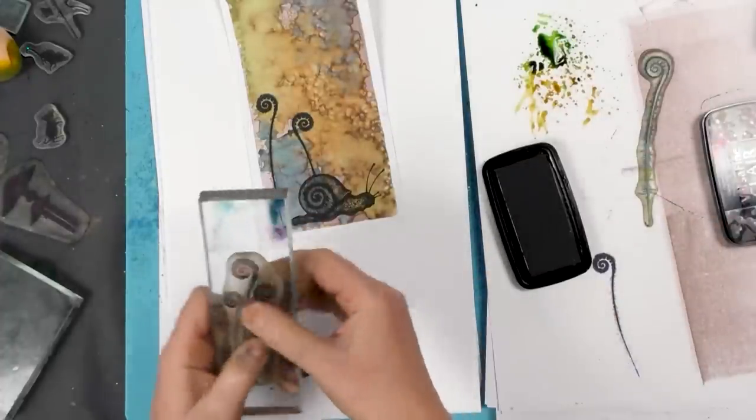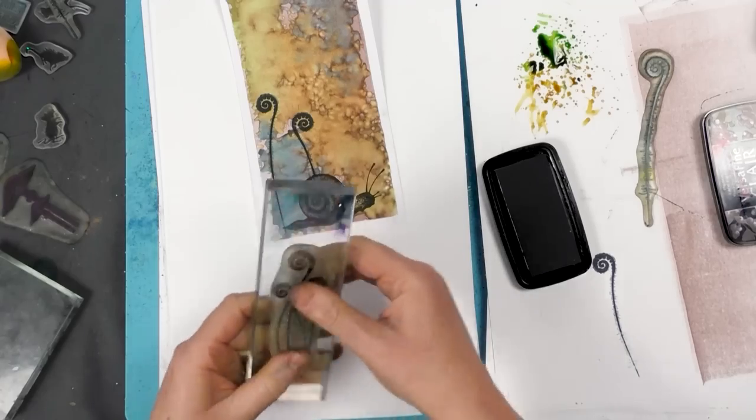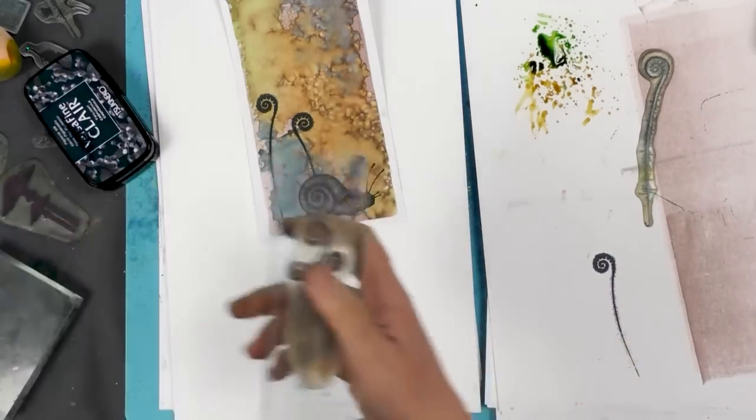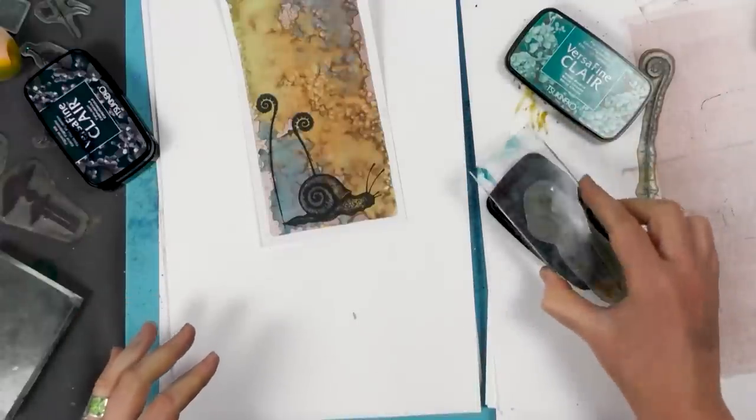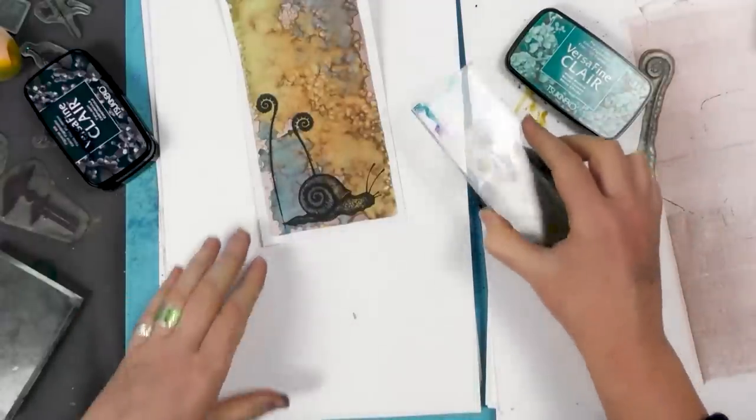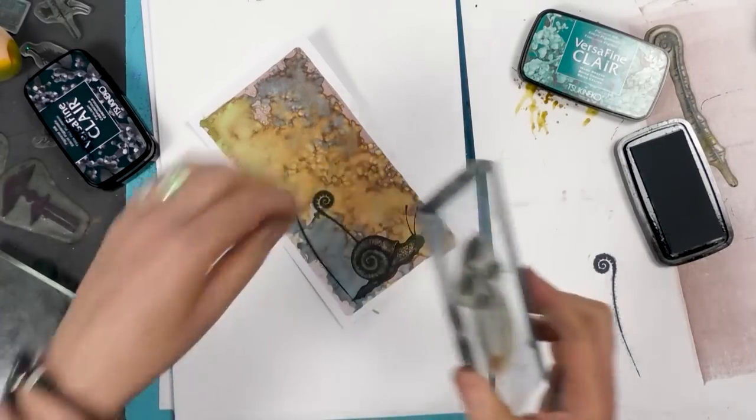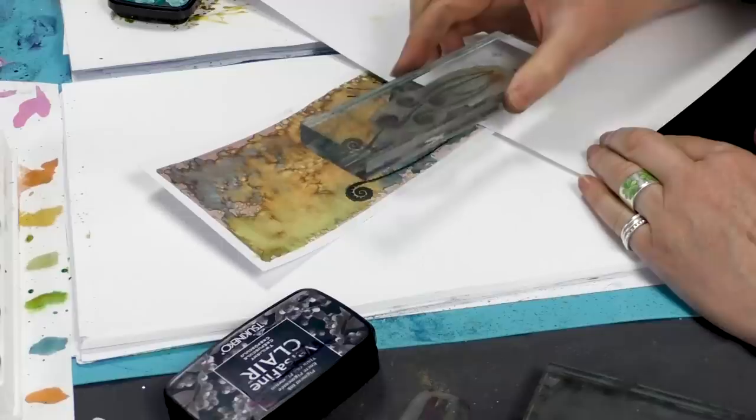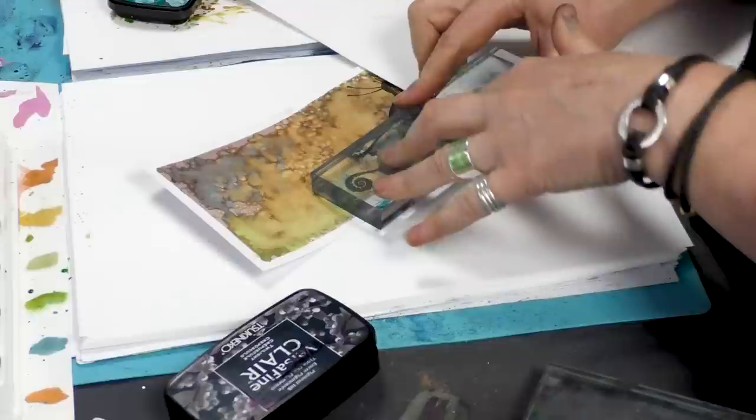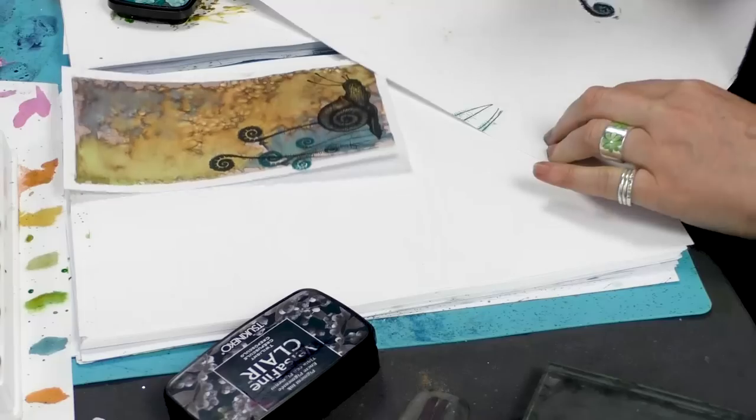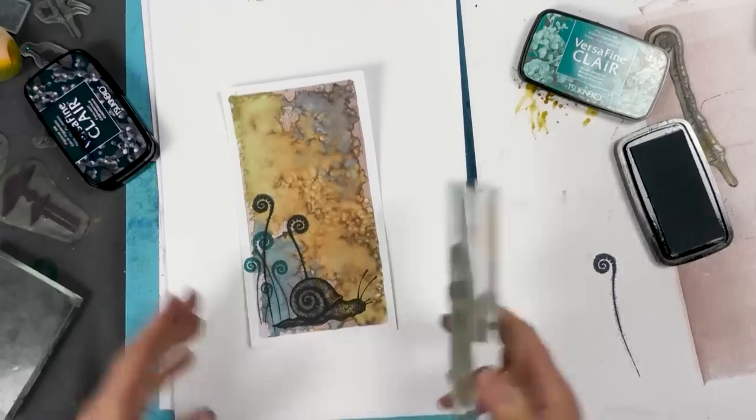And then we've got our little group of ferns. And I'm going to ink that up in a different colour, this time Warm Breeze. I'm just going to mask that off again. There we go.